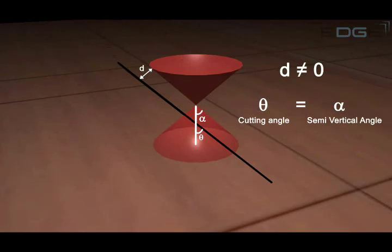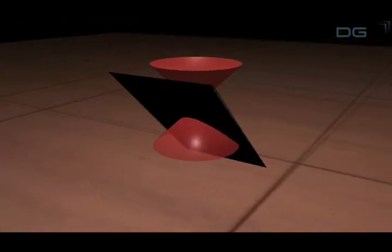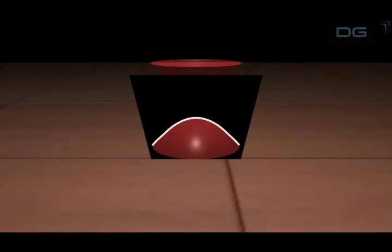Notice one thing here. The cutting plane is parallel to the highlighted generator of the cone as theta and alpha here are equal. Because of this, only one of the two cones of a double cone is cut by the cutting plane. The conic formed is called a parabola.